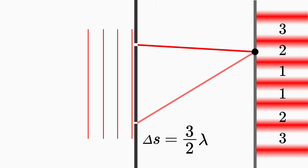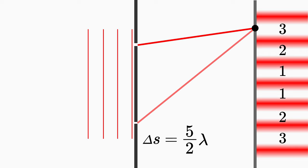For the second dark fringe, three halves lambda, for the third dark fringe, five halves lambda, and so on.